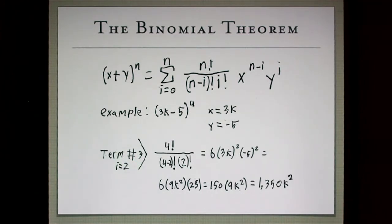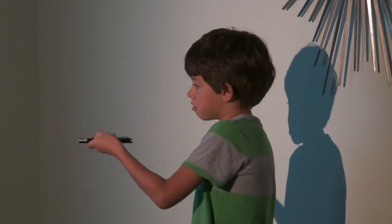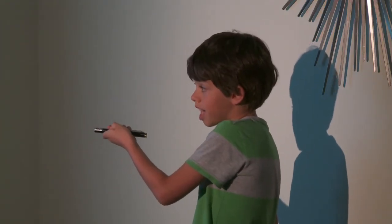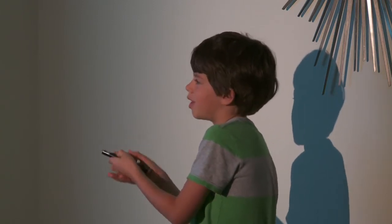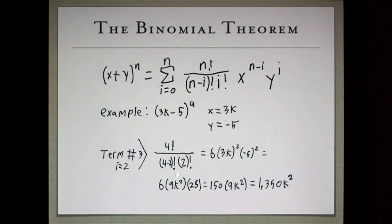Term number 3, our i is now 2. So again, 4 factorial over 4 minus 2 factorial times 2 factorial. And that simplifies to 6, because 4 minus 2 factorial is 2 factorial times 2 factorial. But remember, this coefficient maker can't work all the time, because you have the variable maker to take into account, and there's a coefficient in our variable. So, 6 times 3k squared times negative 5 squared equals 150 times 9k squared equals 1,350k squared. That's our third term.